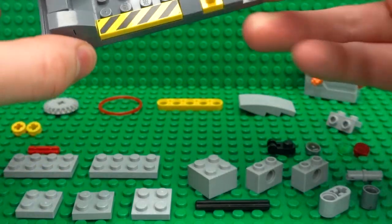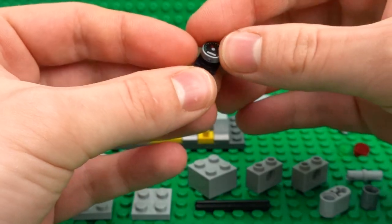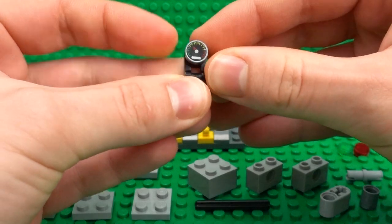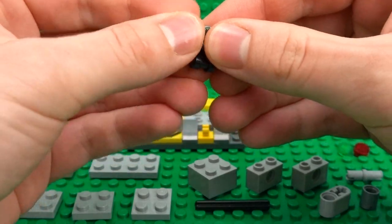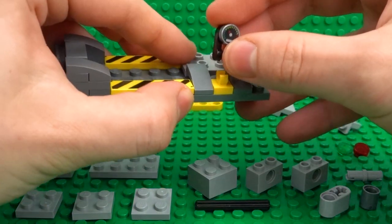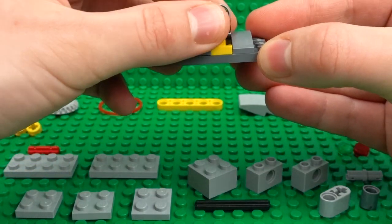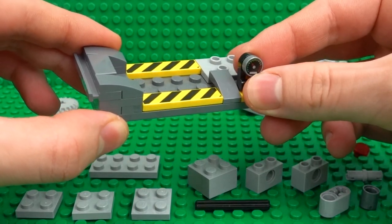And from here you can add some further decoration with a little control panel just on top of this modified 1x1 plate with the bar.